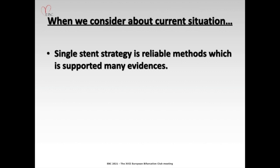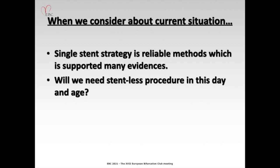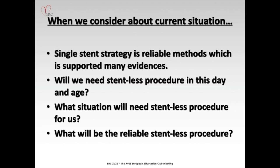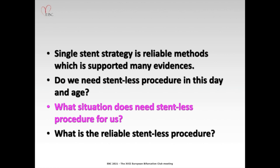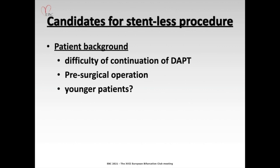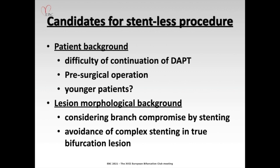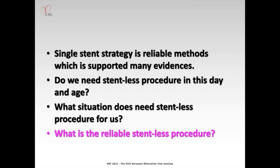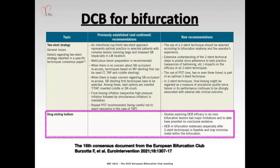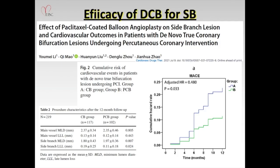When I considered the current situation, I have some questions: single stent strategy is a reliable treatment method, but will I need a stentless procedure in this day and age? What situation will need a stentless procedure? What will be the reliable stentless procedure? Considering the candidates for stentless procedure, some conditions may apply. In Japan, many doctors want to avoid stent use for young patients, especially those under 50s. Regarding lesion morphology, I think two situations are important. About the reliable stentless procedure, DCB is receiving attention recently, and at the last EBC there were some comments about it.